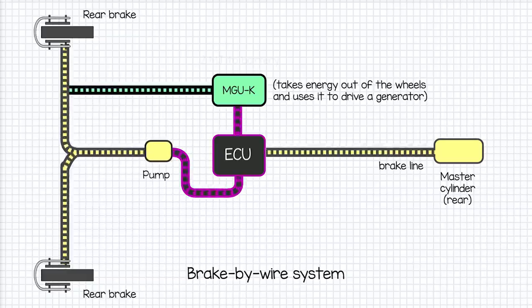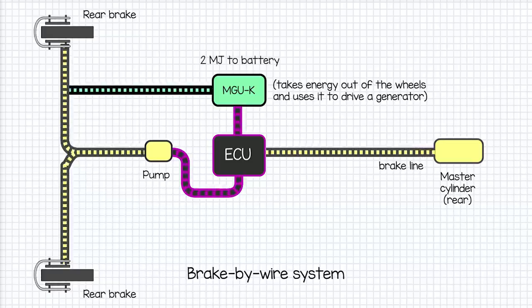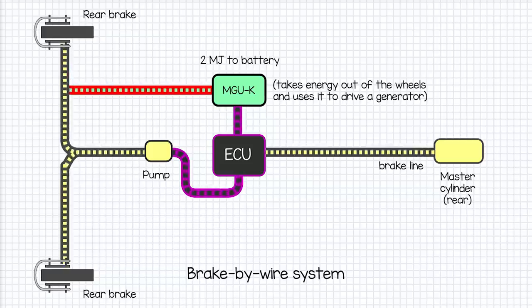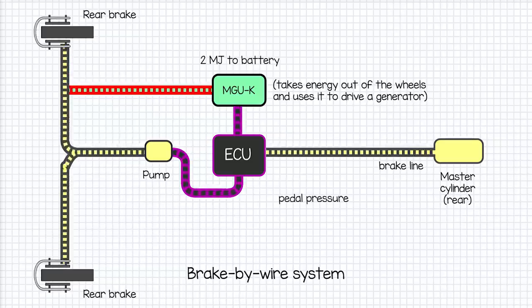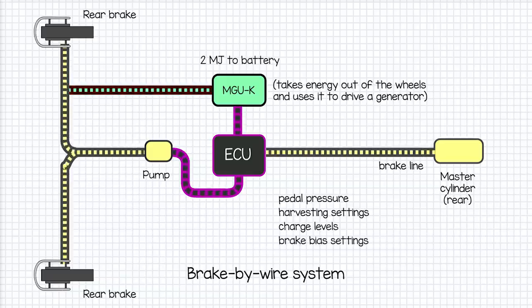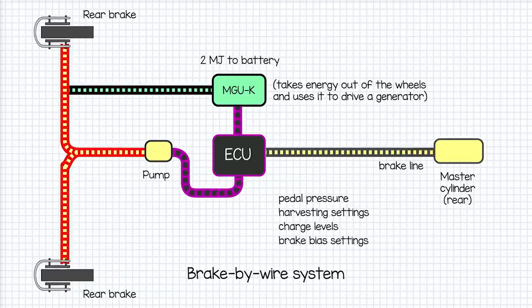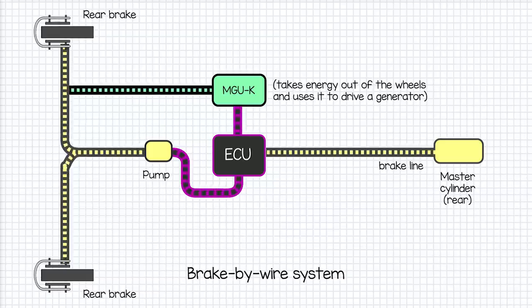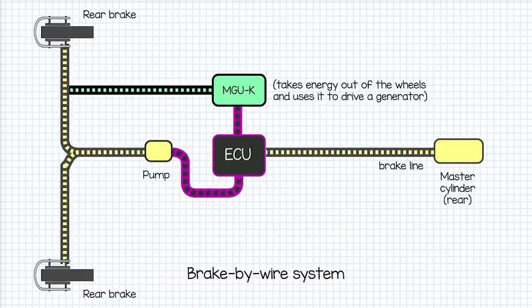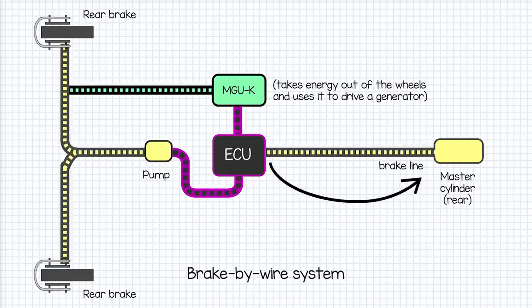The MGU-K can take up to 2 megajoules of energy from the rear wheels per lap. How much energy the MGU-K harvests under braking at any given time is decided by things like brake pedal pressure, harvesting settings, and battery level. The rest of the deceleration is performed by the actual brakes. The electronic control unit or ECU is fed live information constantly, calculating and delivering exactly how much work the physical brakes and the MGU-K perform in decelerating the car when the brake pedal is pushed. Any excess hydraulic pressure not used to brake the car is automatically fed back into the system via a release valve.